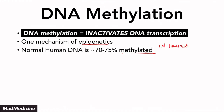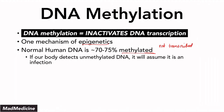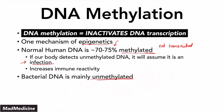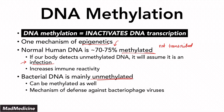If our body detects unmethylated DNA, it's going to assume that it is an infection. Usually, this increases our immune reactivity. If our normal human DNA is 70 to 75% methylated and our body detects DNA that is unmethylated — especially in large quantities — it's going to assume something is happening and activate the immune system. Bacterial DNA is actually mainly unmethylated, so our body will also assume we have some sort of bacterial infection. Bacterial DNA can be methylated, but the methylation mechanism in bacteria is essentially a way of defending bacteria from bacteriophages or viruses.